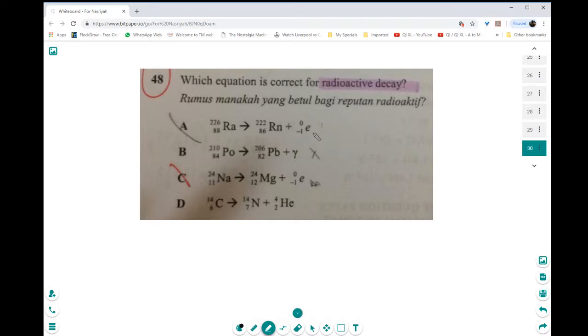Okay, now look at A. A is beta decay. This one is gamma, right? This one also, it says it's beta. This is alpha.